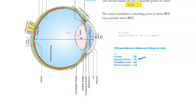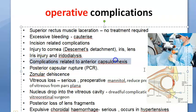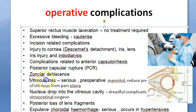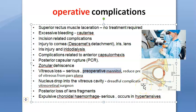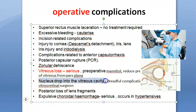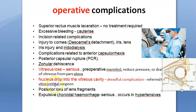Posterior capsule can rupture. Zonular dehiscence can occur — the zonules holding the lens can break. Vitreous loss is a serious complication; preoperatively they give mannitol to reduce pressure to help prevent this. Nucleus drop into the vitreous cavity is a dreadful complication — the nucleus drops into the vitreous cavity and in this case they have to call the vitreoretinal surgeon.